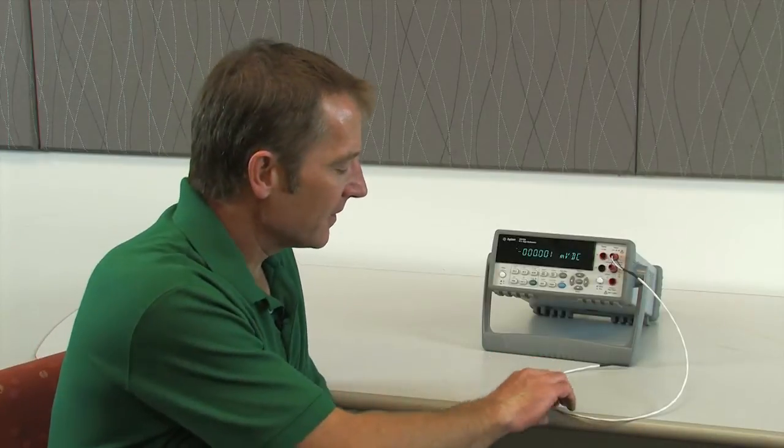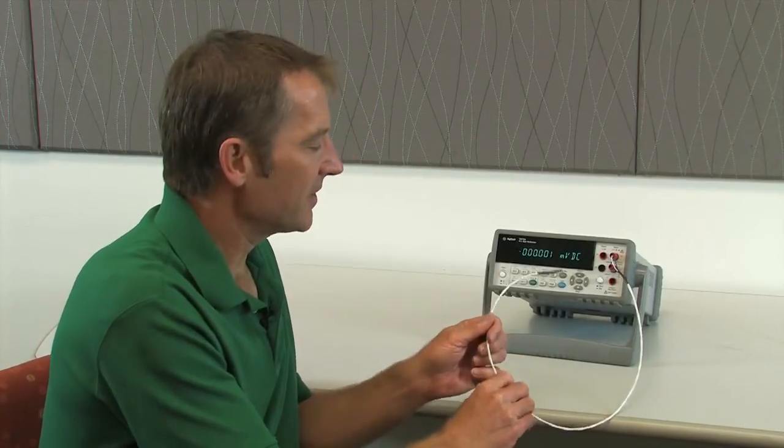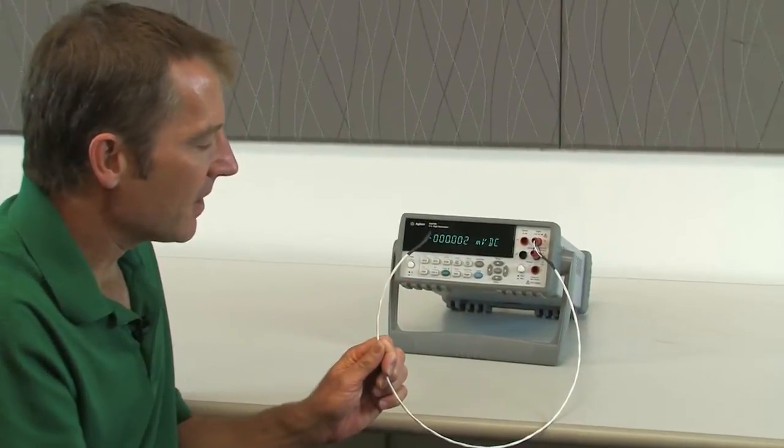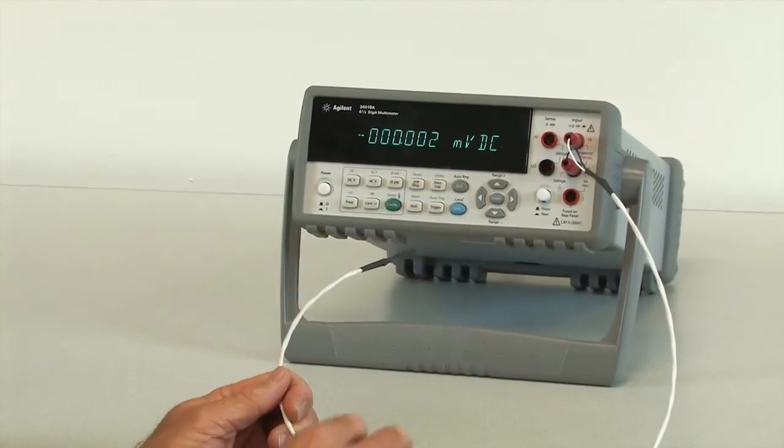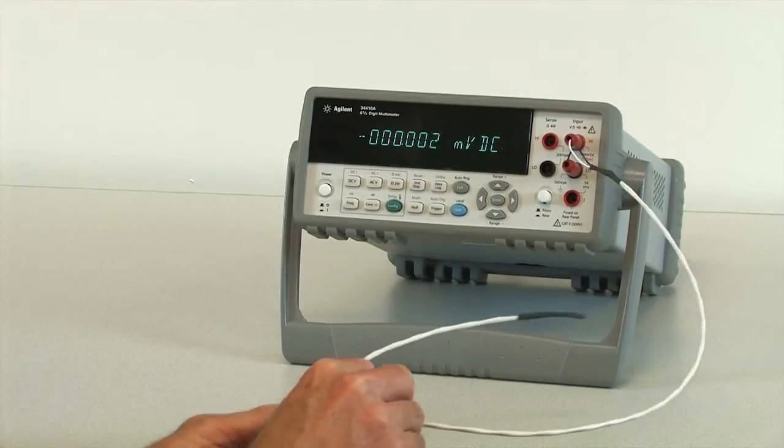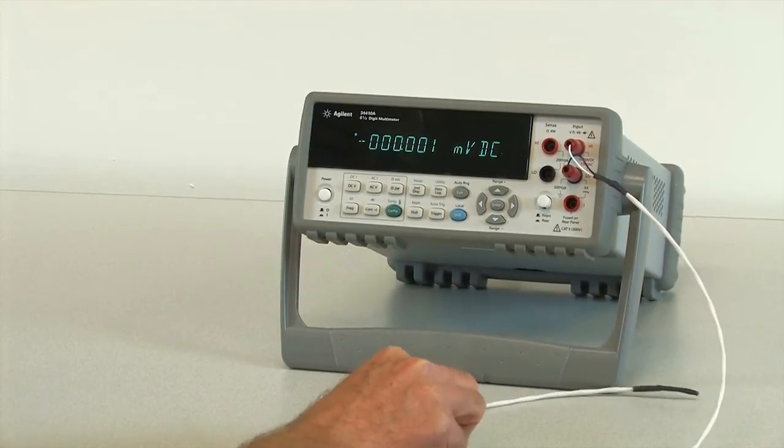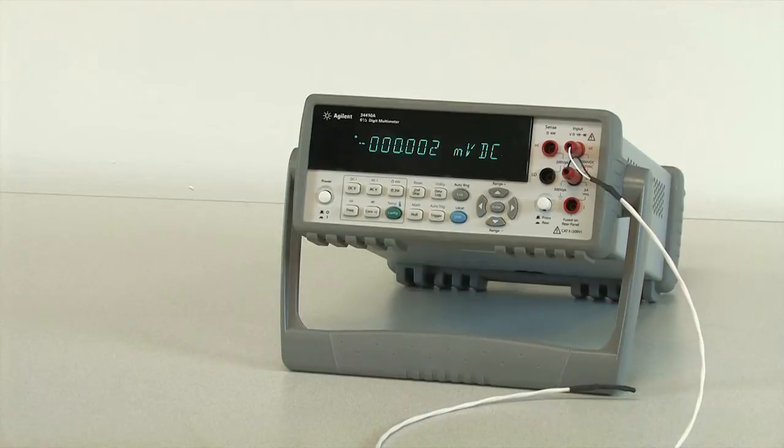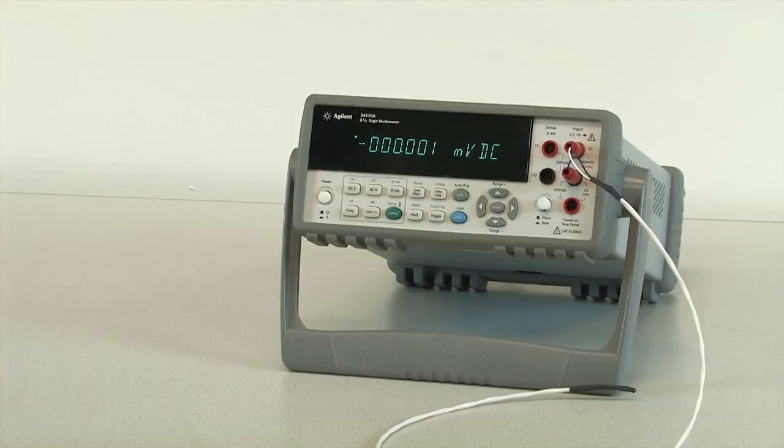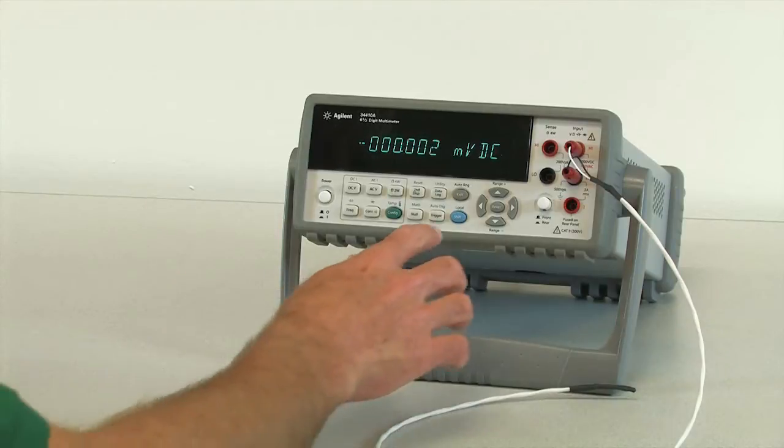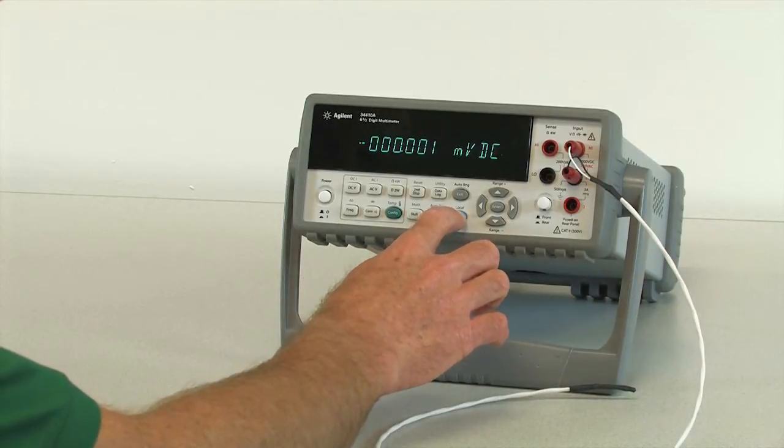Here's our completed temperature probe. As you can see, we have the thermistor on one end of our shielded twisted pair cable, and some banana plugs on the other end. We've connected it to our 34410A multimeter, and now we can set up the 34410A for temperature measurements. It has many different built-in algorithms for measuring temperature.